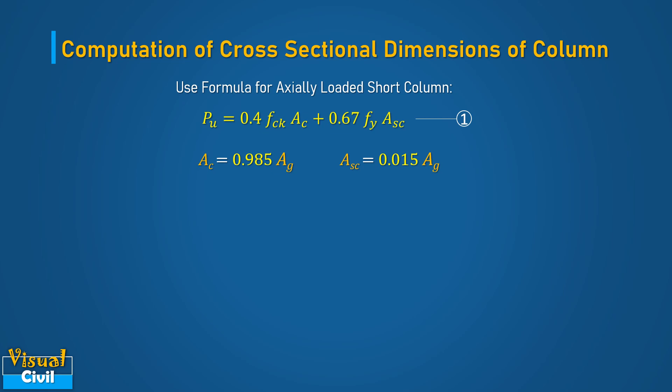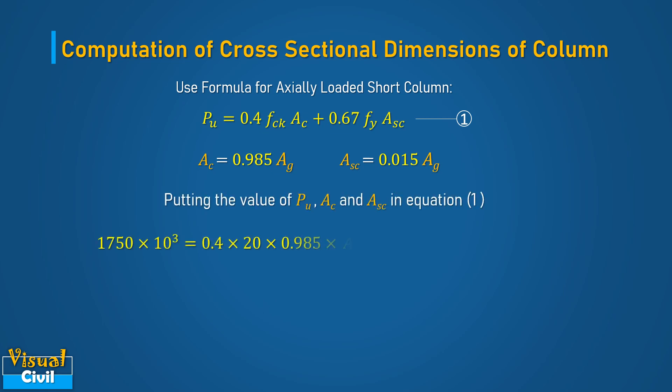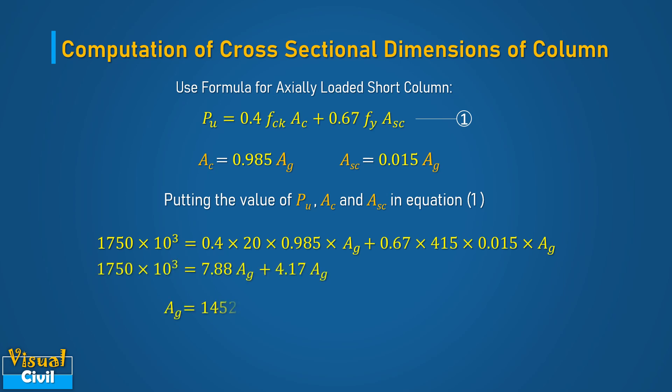By putting the values of PU, AC, ASC, fck, and fy, we get the value of gross area AG equal to 1,45,228 mm².